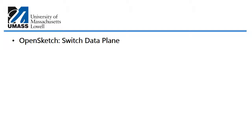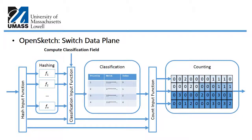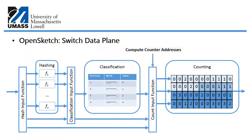The switch data plane is comprised of three stages: the hashing stage on the far left, the classification stage in the middle, and the counting stage on the far right. The hash input function picks packet fields of interest, which feed into the hash functions. The classification input function computes the classification field; the classification table holds wildcard rules and a set of indexes used to compute counter addresses. Those addresses index into entries in the counting table, and the controller can periodically query the accounting table to report packet statistics.